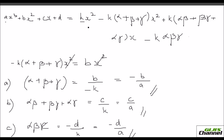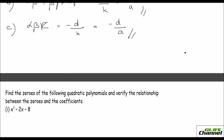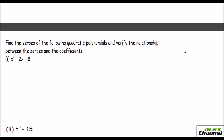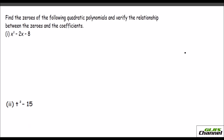So the cubic polynomial can be written as k times x cubed minus k(alpha plus beta plus gamma) x squared plus k(alpha beta plus beta gamma plus alpha gamma) x minus k·alpha·beta·gamma. Now let us apply these results to a problem.